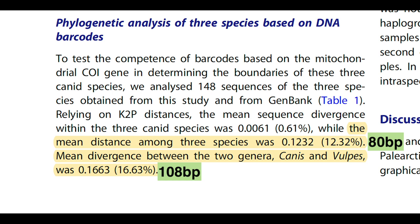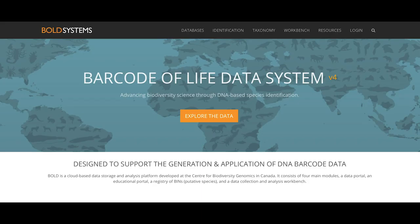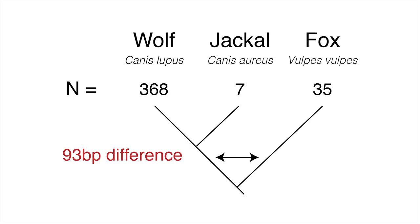This study was looking at a relatively small number of individuals from Iran and Turkey, so I decided to do the same analysis using a much larger dataset from the Barcode of Life Data System database. In total, I included complete 648 base pair CO1 barcode sequences from 368 wolves, 7 jackals and 35 foxes. My results approximately confirmed the numbers in the paper — I found about 93 nucleotide differences separating the fox from the two canine species.